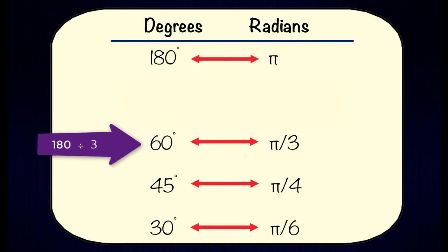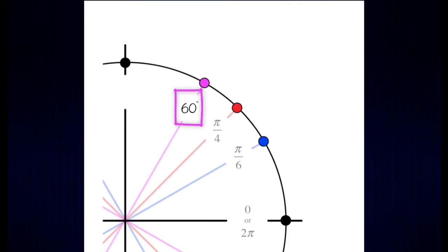Back to our chart, if we take 180 degrees divided by three we're going to get 60 degrees. So 60 degrees is equivalent to pi over three radians. Back to our unit circle we can replace 60 degrees with pi over three.